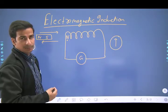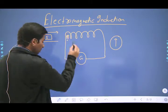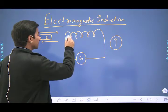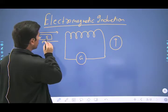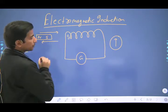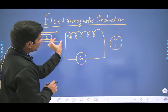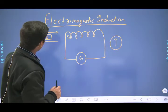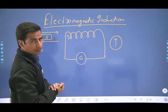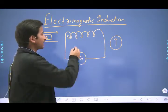Bina work kiye aap ko kabhi bhi energy produce nahi kar sakti — this system would be automatically generating energy. That's why the pole developed opposes the motion of the magnet. Agar aap magnet ke south pole ko coil ke end ke close lana chahenge, toh ye end bhi south ban jayega, kyunki south pole south pole ko repel kerta hai — and this repulsion means you have to do work to bring the magnet closer.